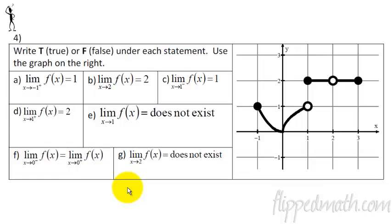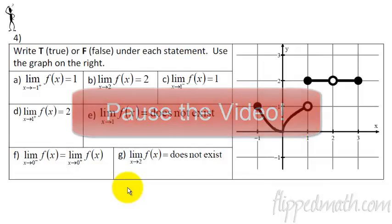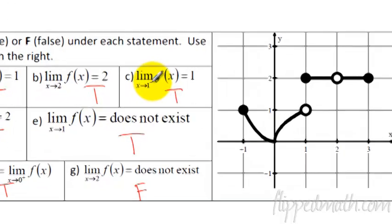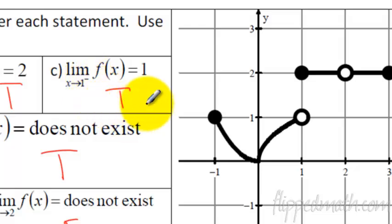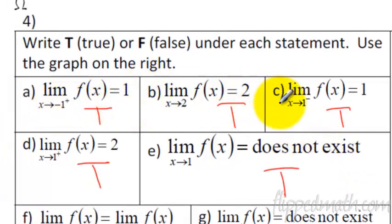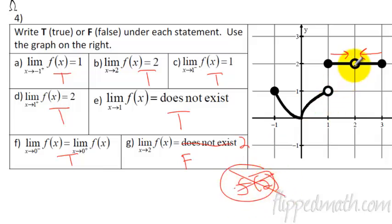This problem is a true or false problem. Pause the video now and go through and answer true or false for each of these statements. The answers: all of them were true except the last one, which is false. One thing to watch out for is when you see a number raised to a negative exponent — for example, 1 with a negative superscript. That has nothing to do with negative 1; it means we're approaching the value of 1 from the left side. Don't confuse the negative in front with the negative up in the exponent. The last one is false because as x approaches 2 from both the left and right sides, the limit exists and it's 2 — not DNE. However, if we were talking about f of 2, that would not exist because it's an open circle.